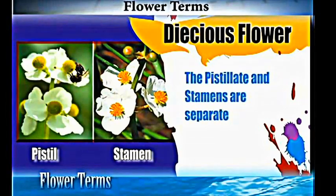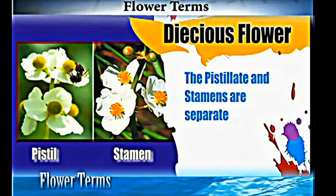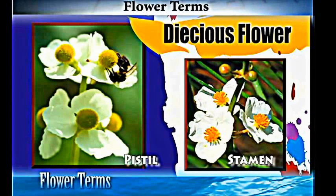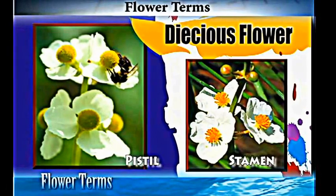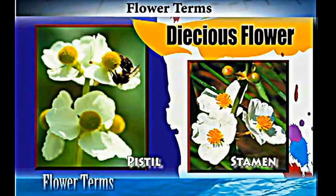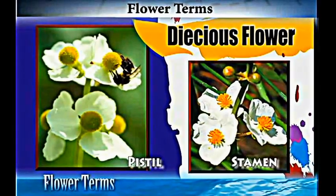When the pistillate and the staminate flowers are on separate plants, then we call them 'dioecious.'